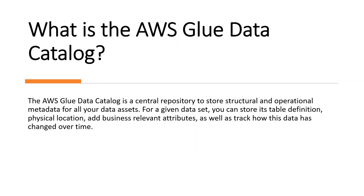What is the AWS Glue Data Catalog? The AWS Glue Data Catalog is a central repository to store structural and operational metadata for all our data assets. For a given data set, we can store table definitions. The AWS Glue Data Catalog is Apache Hive Metastore compatible and is a drop-in replacement for Apache Hive Metastore for big data applications running on Amazon EMR. It also provides out-of-box integration with Athena, EMR and Amazon Redshift Spectrum. Once we add table definitions to the Glue Data Catalog, they are available for ETL and readily available for querying via Athena, Amazon EMR and Redshift Spectrum.